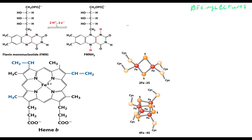Now let's talk about cofactors in the electron transport chain. The complexes in the inner membrane contain enzymes that use cofactors to do their jobs. Think of the mitochondria as a factory: the workers are enzymes and the tools that help them do their job are the cofactors. These cofactors are made of metals — they contain metals or flavins. The metals include iron, iron-sulfur combinations, and copper. Using pure iron is called a heme group.